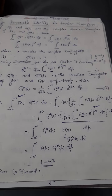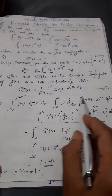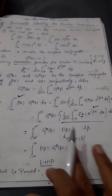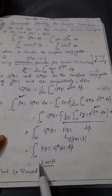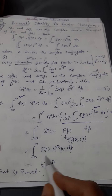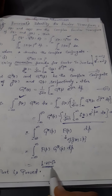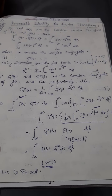So to prove Parseval's identity's first part, we find g★(x), substitute its value on the right-hand side, and easily prove the equality. The left-hand side, integral of F(p)·G★(p) dp, is thus established. Next, see the second part.